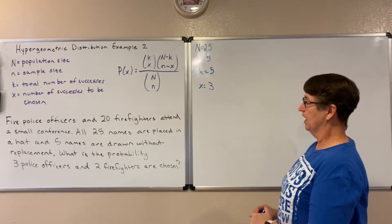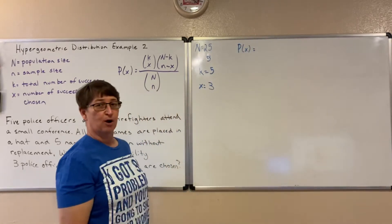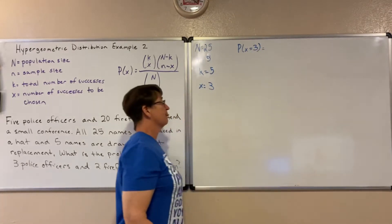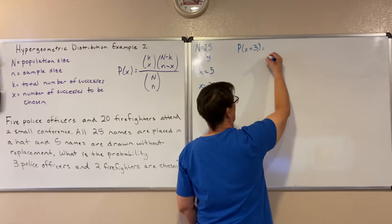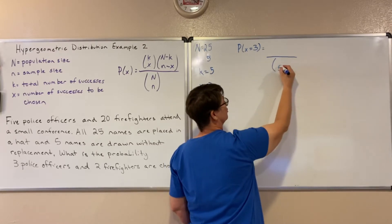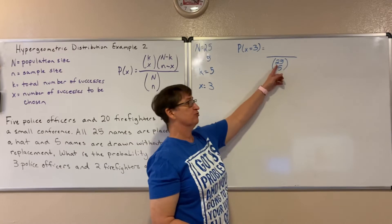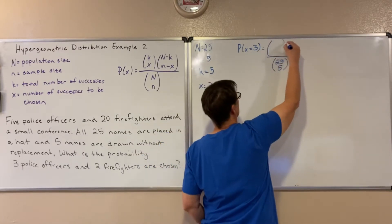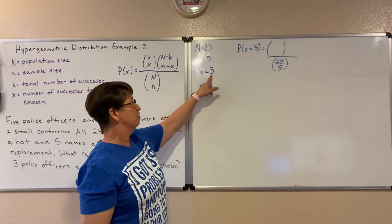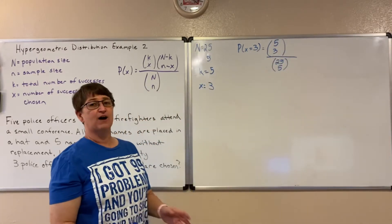Now we're going to fill in our formula. On the top of our formula we put in our probability — our x value goes in here, so in this case we're looking for three police officers to be chosen. On the denominator we put the total number of ways that five names could be chosen from the total of 25. On top we want to draw three police officers out of the five police officers that we have, so we're using the combination five choose three.